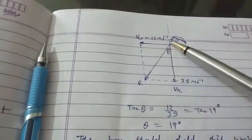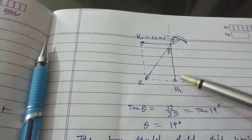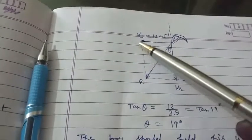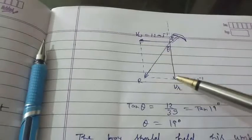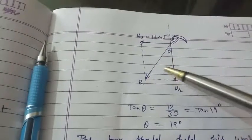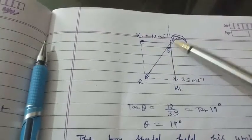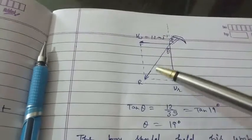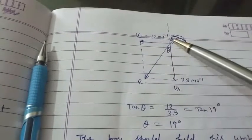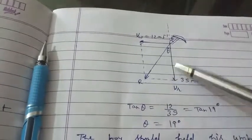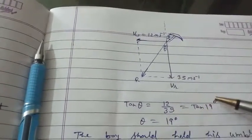When we apply tan theta, it will be perpendicular upon base. This is 12 vector, its magnitude is 12, and this is 35. Then we can write tan theta equal to 12 upon 35. The value of theta is 19 degrees.